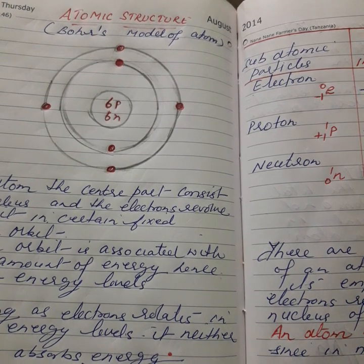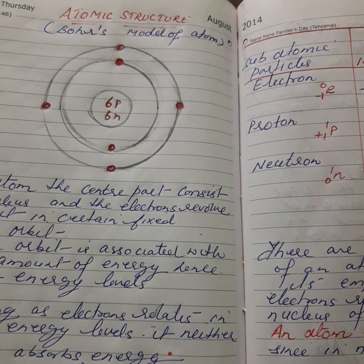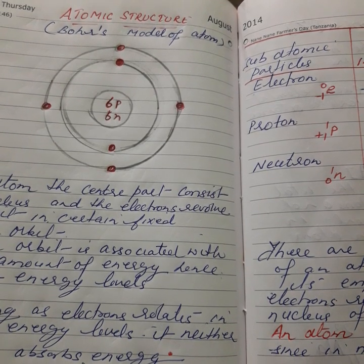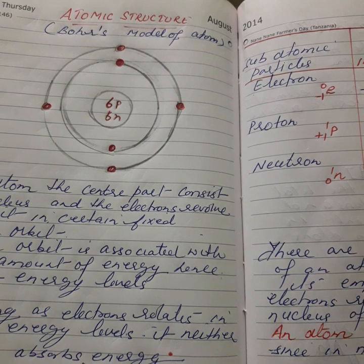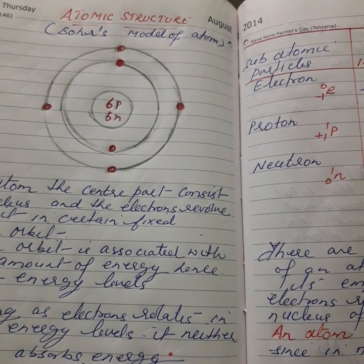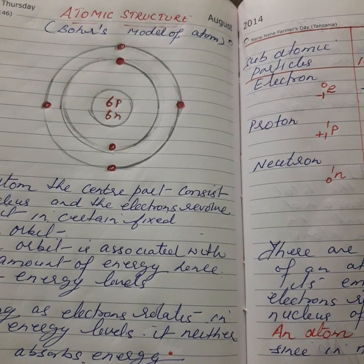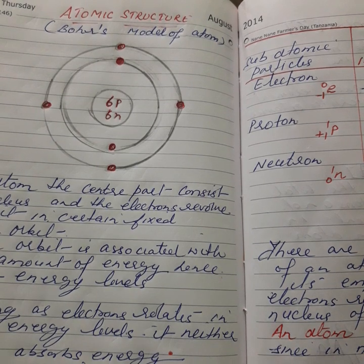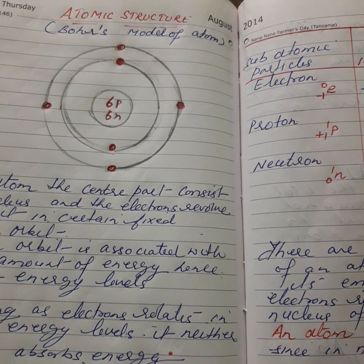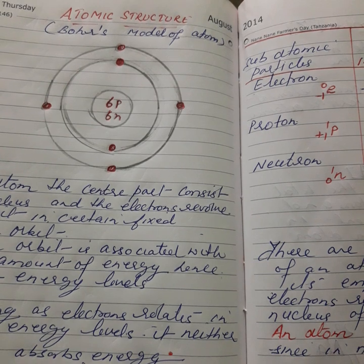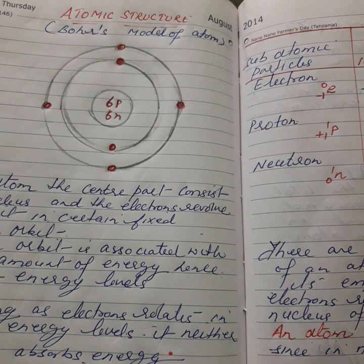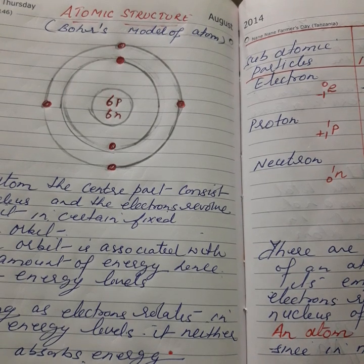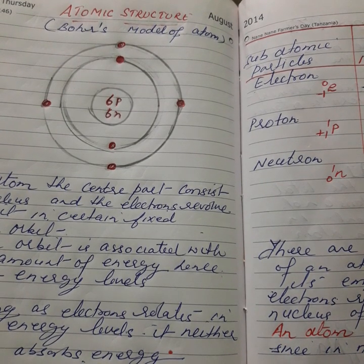But Rutherford failed to explain the stability of an atom. According to the laws of electrodynamics, if an electrically charged particle is in motion, it radiates energy. So if an electron moves around the nucleus, it must radiate energy and gradually move towards the nucleus following a spiral path, till it collides and ultimately collapses into it. But we already know that the atom is quite stable, so Rutherford failed to explain this stability.